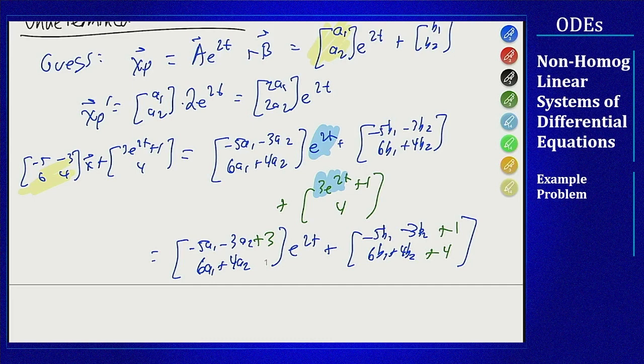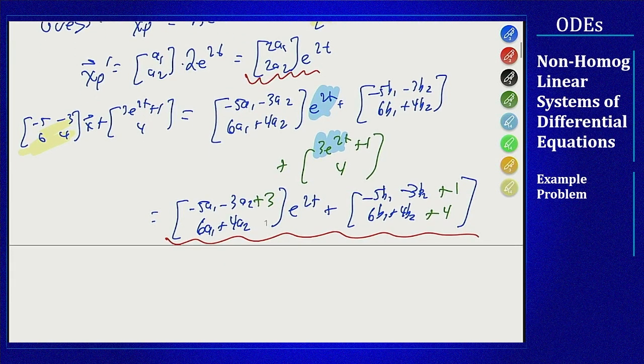Now that we have this set up, to figure out what a1 a2 b1 b2 have to be, I need these two things to match. I compare them term by term because I compare them by the function of t attached to them. What I get from that is that the e to the 2t coefficients must match, and the constant ones must match.